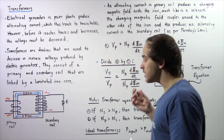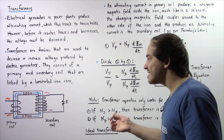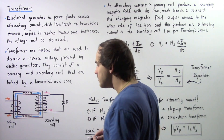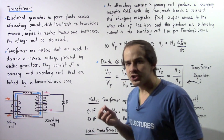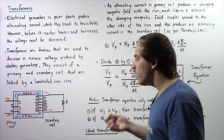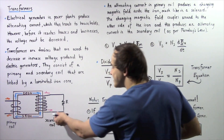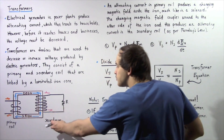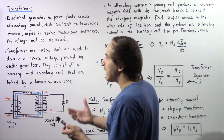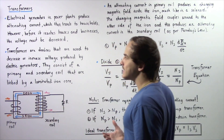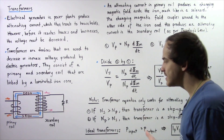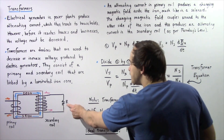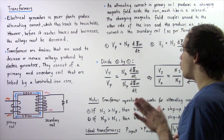That voltage will have the same exact frequency as the voltage in the primary coil. As a result of that induced EMF in the secondary coil, an alternating electric current will begin to flow through the secondary coil, and that current will eventually reach the various types of devices found in households and businesses, such as computers.